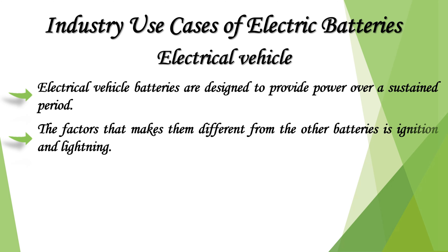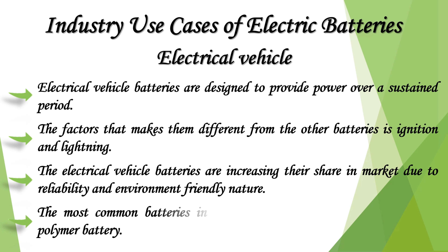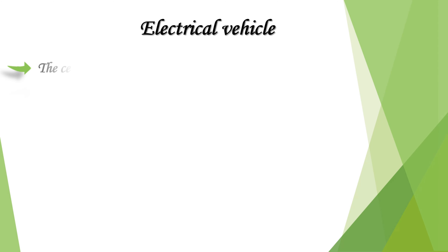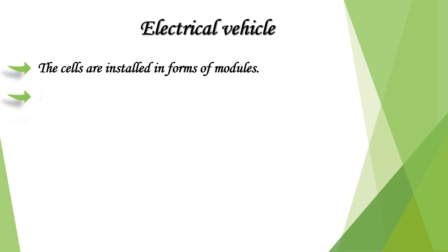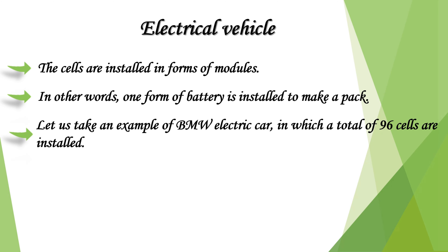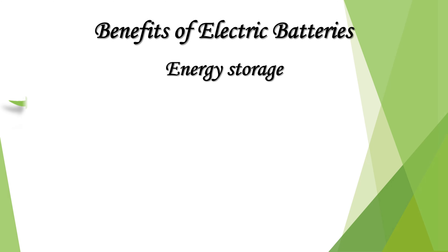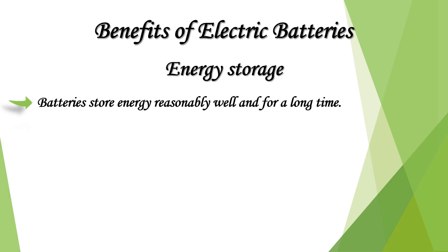Electric vehicle batteries are designed to provide power over a sustained period. What makes them different from other batteries is related to ignition and lighting needs. EV batteries are increasing their market share due to reliability and environmental friendliness. The most common batteries in modern cars are lithium-ion and lithium-polymer batteries. The cells are installed in modules — for example, a BMW electric car has a total of 96 cells installed in frames that protect the batteries from external heat and vibration; a combination of cells is called a module.